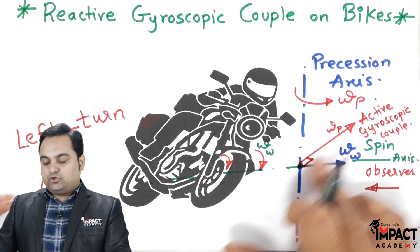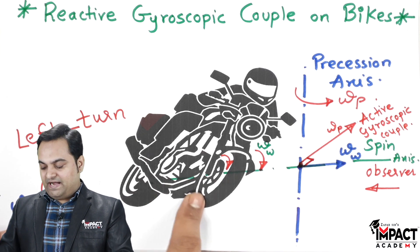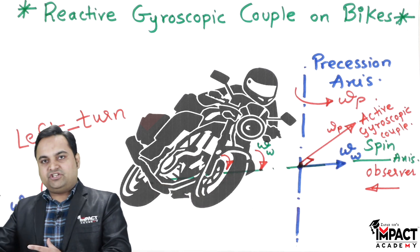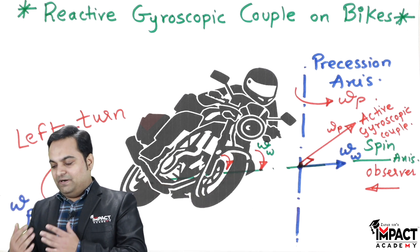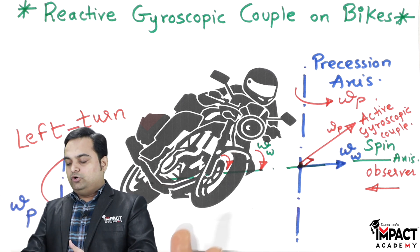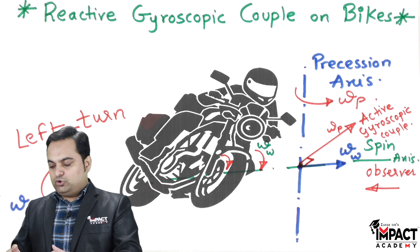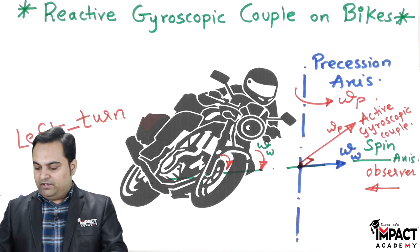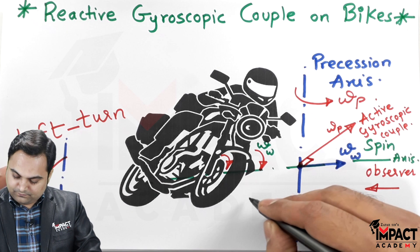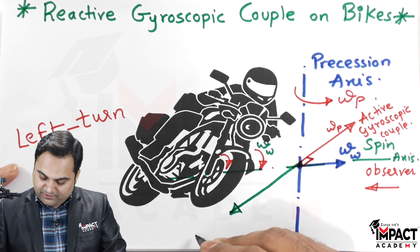The active gyroscopic couple is the couple offered by the bike towards nature, but there will be a reaction from the surroundings back to the bike — that is called the reactive gyroscopic couple. The reactive gyroscopic couple is exactly opposite in its line of action.